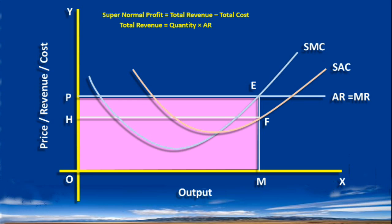Total Cost is equal to Quantity multiplied by Average Cost. According to our graph, OM is the output. OH is the average cost. OM multiplied by OH. Area OHFM represents Total Cost.